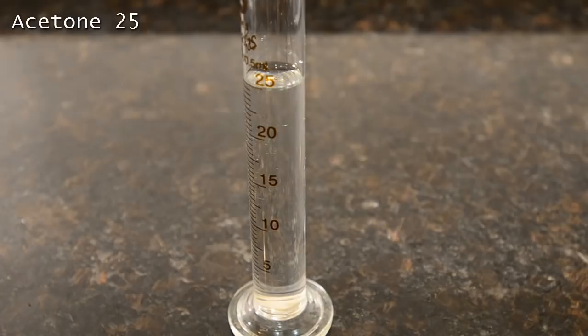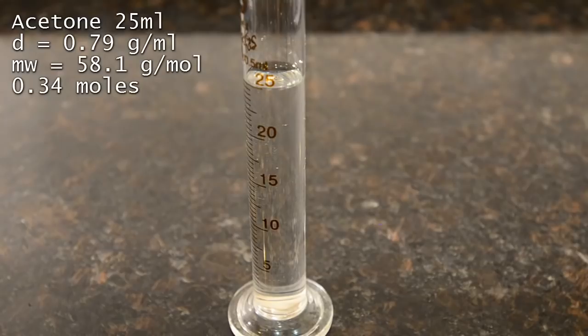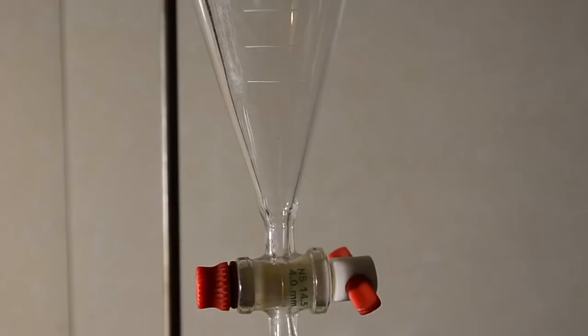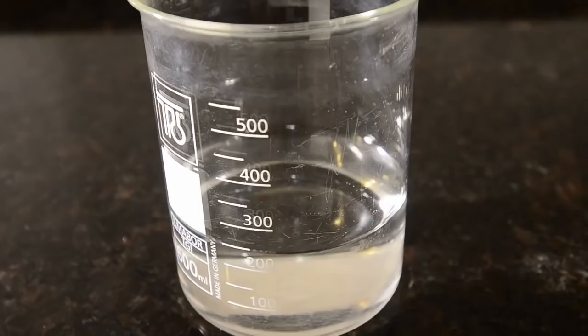First measure out 25 ml of acetone. This is an excess of what we need theoretically but we use an excess to reduce formation of di-enol compounds in the first reaction. Add this to the separating funnel and make sure that the stopcock is closed and tight to avoid leaks.